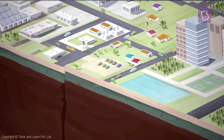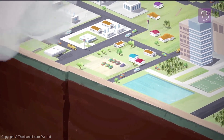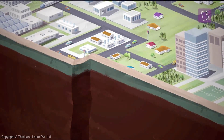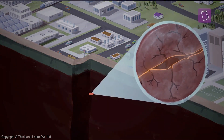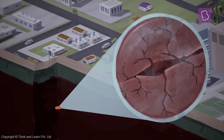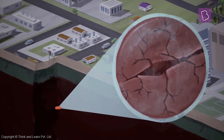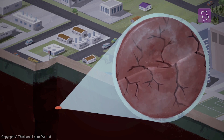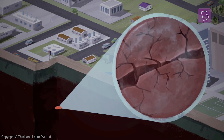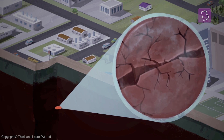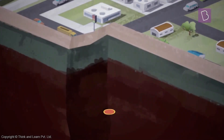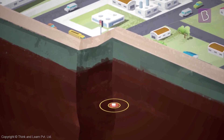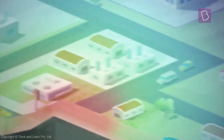When two plates slide past each other, the effects can be pretty violent. This is because these plates have several irregularities on them. When these plates slide past each other, the jagged edges sometimes get caught against each other. When they get released after this tug of war of tectonic plates, the energy released causes vibrations.